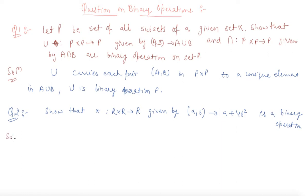Since * carries each pair (A,B) to a unique element A + 4B², this is a binary operation on R.